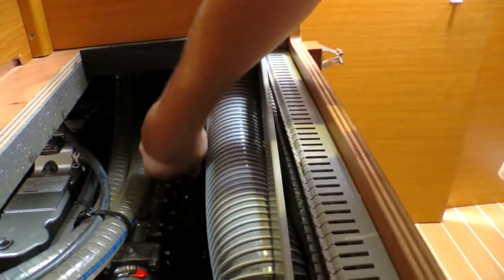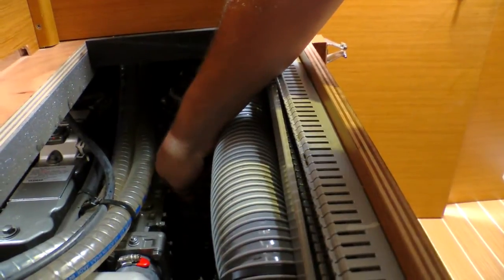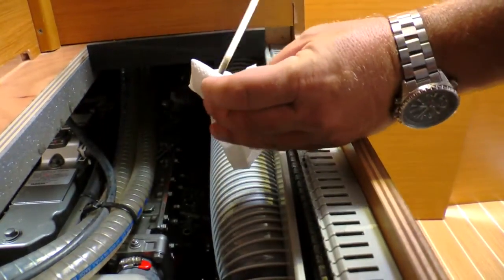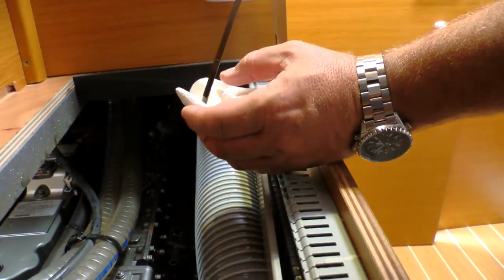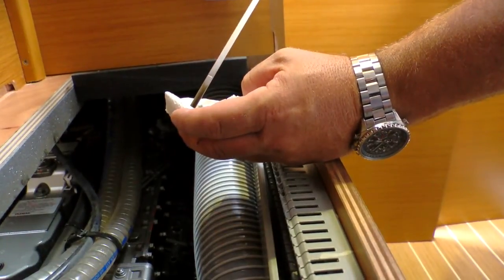I'm going to reinsert the dipstick all the way down, make sure it's firmly placed inside the tube, and pull it back out and check it. This way we get a proper check of the oil. We can see it's between minimum and maximum, so this is just fine.